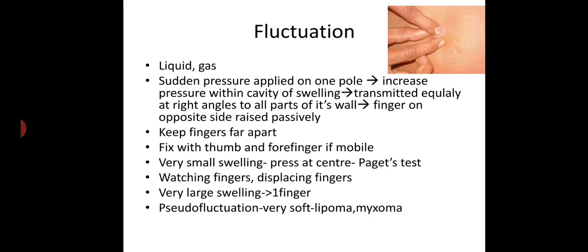Next, fluctuation — occurs when the content is liquid or gas. Sudden pressure applied on one pole causes increased pressure within the cavity, which transmits equally at right angles to all parts of the wall, raising the finger on the opposite side passively. Fingers should be kept far apart. For a very mobile swelling, fix it with thumb and forefinger. For a very small swelling, press the center to get fluctuation — this is called the packet test. The finger that feels is the watching finger; the finger that displaces is the displacing finger. For large swellings, more than one finger is needed. Pseudo-fluctuation is seen in very soft swellings like lipoma or myxoma.